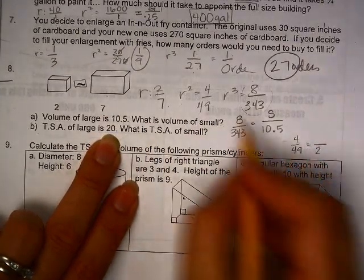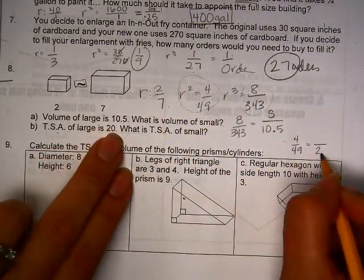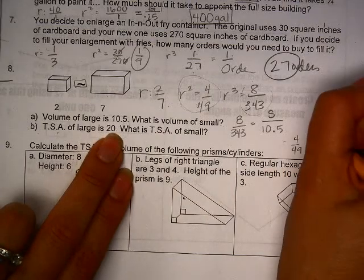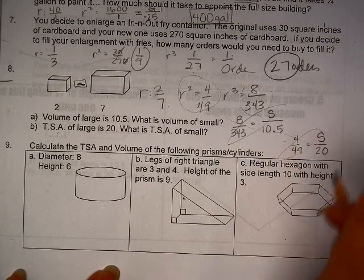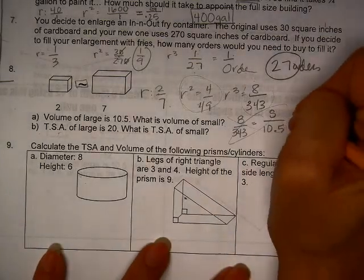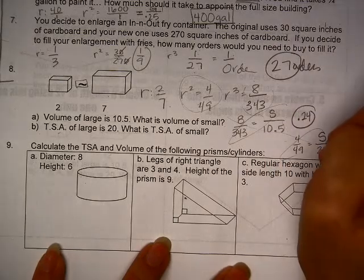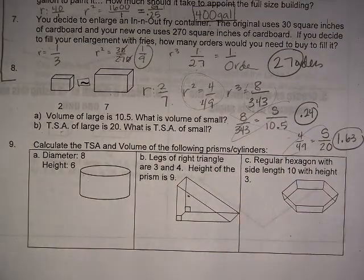And then this one is 4 is to 49 as the volume of the large is, I mean, I'm sorry, I'm using my R squared because it's TSA, and I use 20 for the large, and I'm looking for the small. So those are my two ratios, do a little cross-multiply and fun, and you get your answers. So I already told my class it's 0.24 for you to check your answers, and 1.63, make sure that you are doing the multiplication correctly.